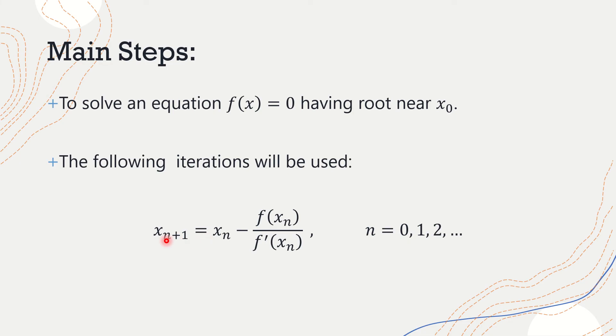You see, if you put n = 0, you will be having x₁ which is x₀ - f(x₀)/f'(x₀) and so on. If you put x = 1, then you'll be using the value of x₁ found in previous iteration to get the value of the next iteration.